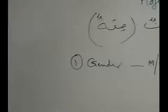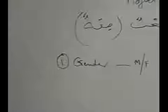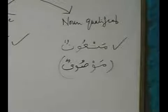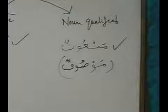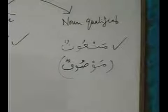So if the Manut, noun qualified, is moannas (feminine), then the adjective will be moannas. If the noun qualified is muzakkar (masculine), the adjective will be masculine. That is number one condition. Number two condition, brothers and sisters, is number.